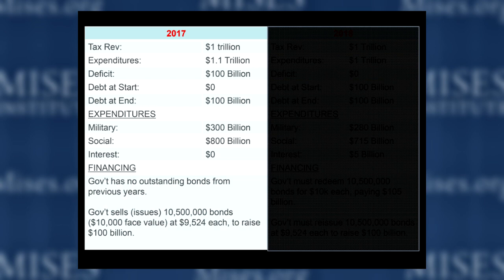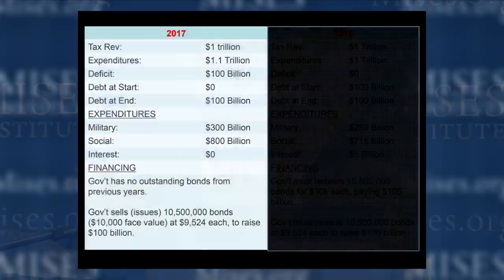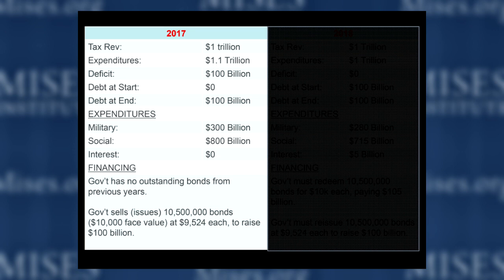How does the finance minister — or the Treasury Secretary in the U.S. context — actually do this mechanically and contractually? Well, they don't have any outstanding bonds from previous years because they started with zero debt. What they do this year is sell ten million five hundred thousand bonds with a ten thousand dollar face value at nine thousand five hundred and twenty-four dollars each, which raises them one hundred billion dollars. When the government runs a deficit, they issue bonds — a bond is just a legal claim saying the owner is entitled to a payment from the Treasury.